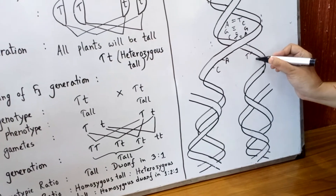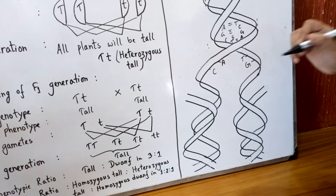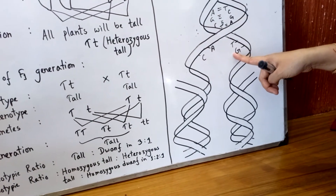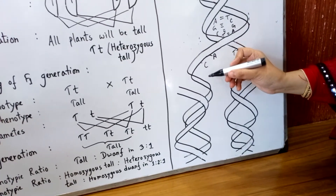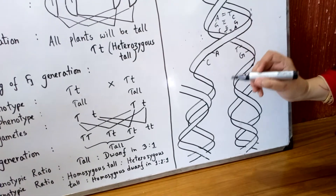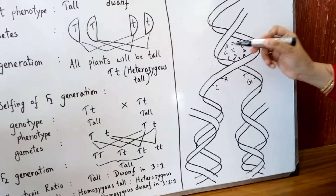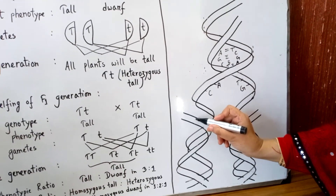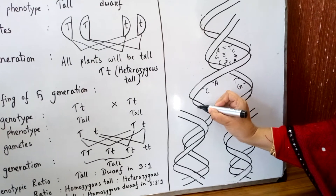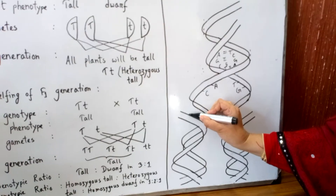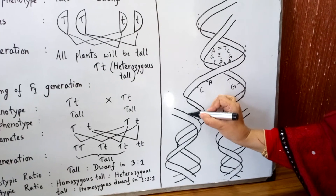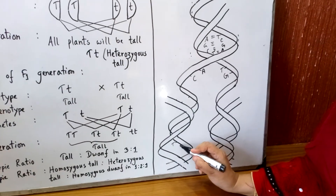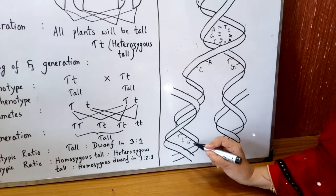For the second step, complementary nitrogenous bases will come. There are free nucleotides present in the cytoplasm. These nucleotides will come and join the old mother DNA strand to form a new DNA strand. For example, if the old strand has T, C, G, A — then in the new DNA strand, the complementary bases will be: thymine connects with adenine, so A will come; cytosine connects with guanine, so G will come; G gives C; and A gives T.